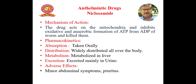Next is Niclosamide. Niclosamide acts on the mitochondria and inhibits oxidative and anaerobic formation of ATP from ADP of worms, killing them. Niclosamide is taken orally, widely distributed all over the body, metabolized in liver, and excreted mainly in urine. Adverse effects are minor abdominal symptoms and pruritis may be there.